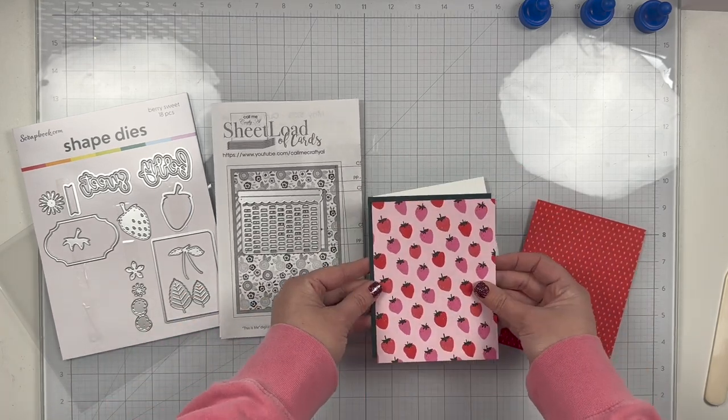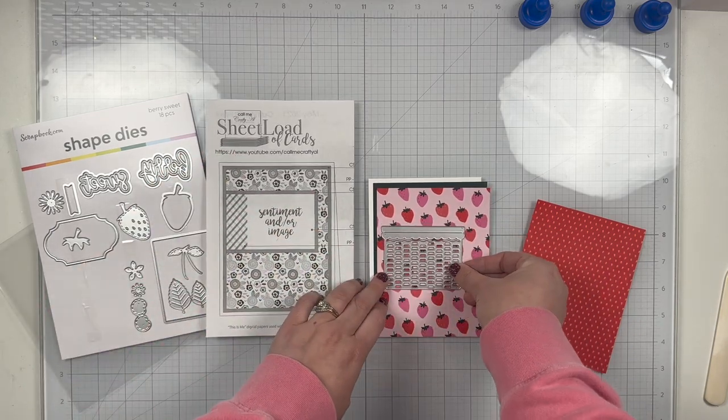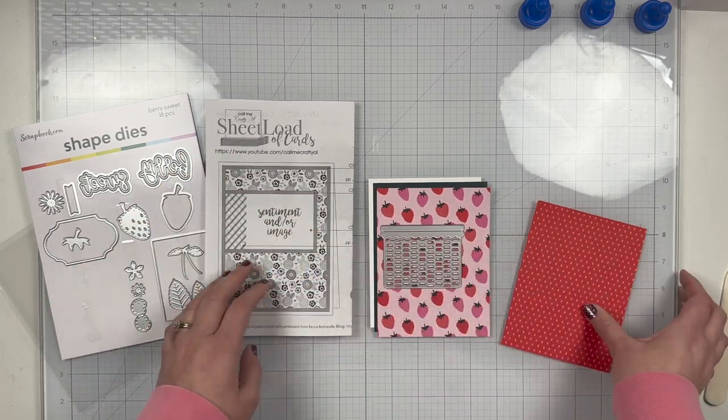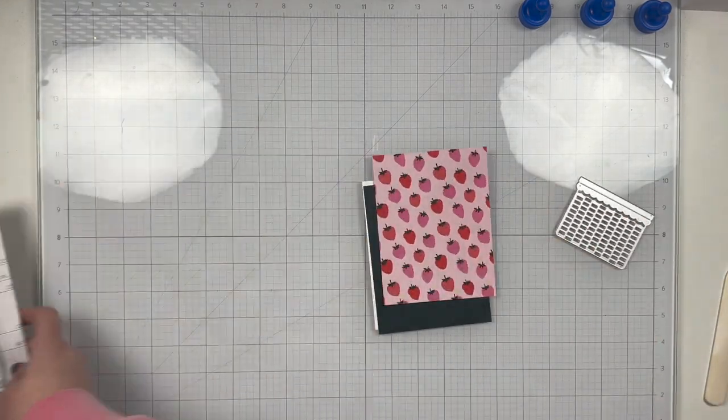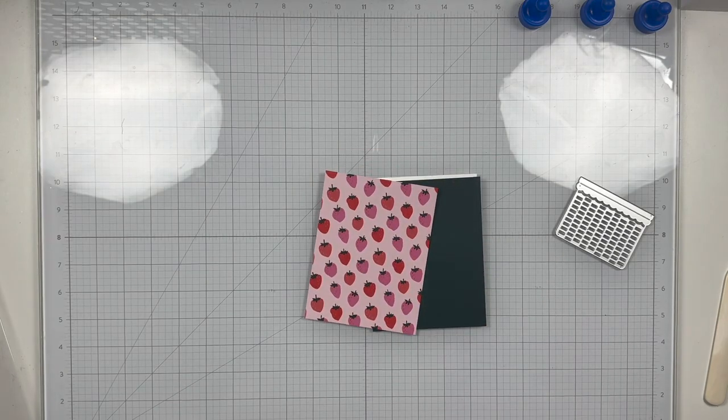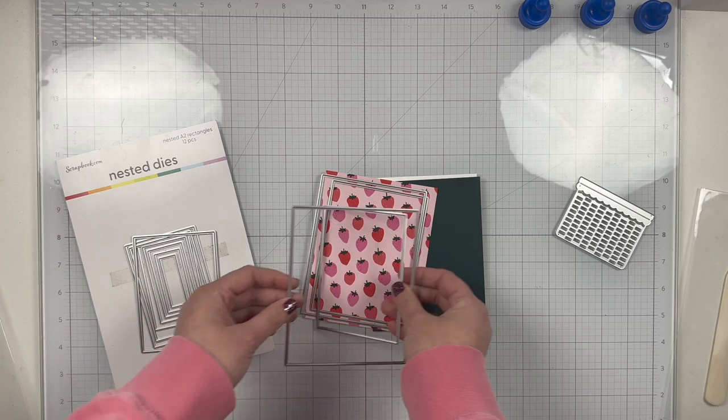Instead of creating a little panel to put on the front of the card, I'm going to use my basket from the Berry Sweet dies. So I'm just kind of figuring out how I'm going to lay this on. And I think the basket's large enough that I don't need another piece of pattern paper to have a panel. I'm just going to use that basket as my panel.